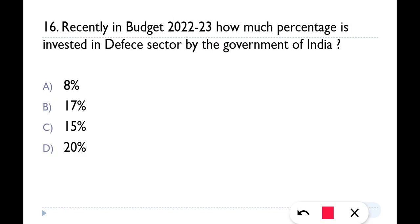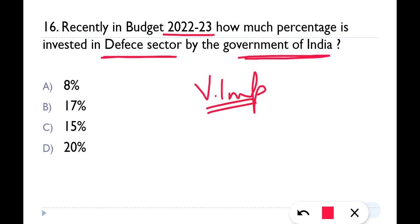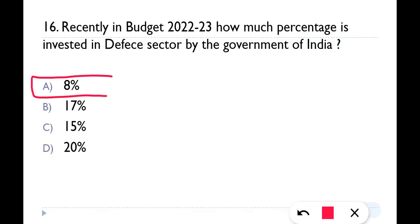Last question, number sixteen, and an important one from Budget 2022: In Budget 2022-2023, what percentage is invested in the defense sector by the Government of India? Options are 8%, 17%, 15%, or 20%. The correct answer is option A — 8%. The defense sector budget is 8%, and this is an important question from Budget 2022.